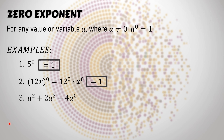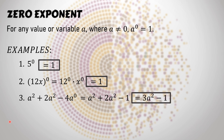Third example: a squared plus 2a squared minus 4a raised to zero. Notice that only negative 4a has the zero exponent. So a squared and 2a squared are not equal to one. First, simplify negative 4a raised to zero — that is negative one. Since a squared and 2a squared have the same variable and exponent, we add them: 1 plus 2 is 3a squared. The final expression is 3a squared minus 1. We cannot combine 3a squared and 1 because they do not have the same variable and exponent.